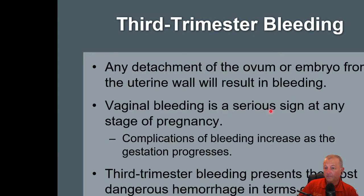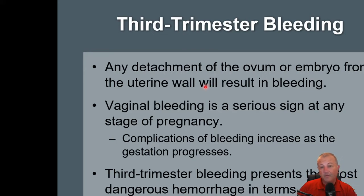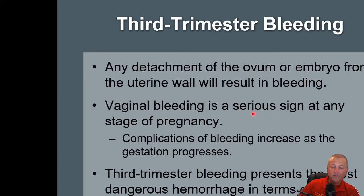Third trimester bleeding — two things we're worried about: abrupto placenta and placenta previa. These are two things we would see in later onset of pregnancy. Placenta previa is described as a darker type of blood, and abrupto placenta is described as bright red blood.